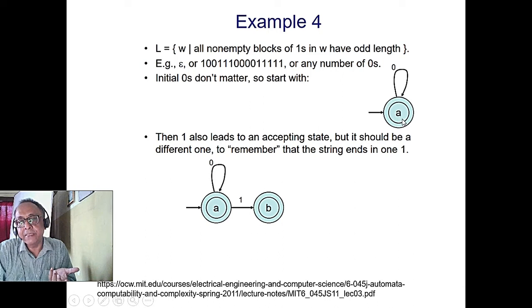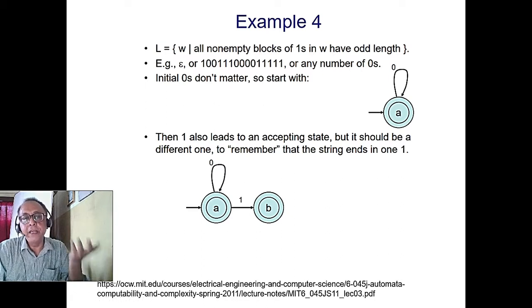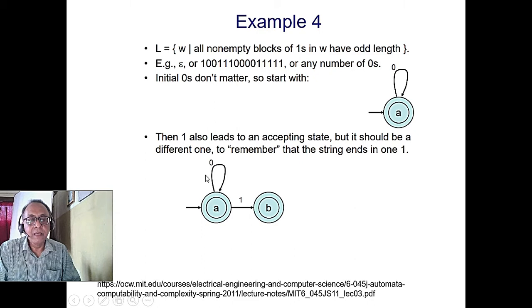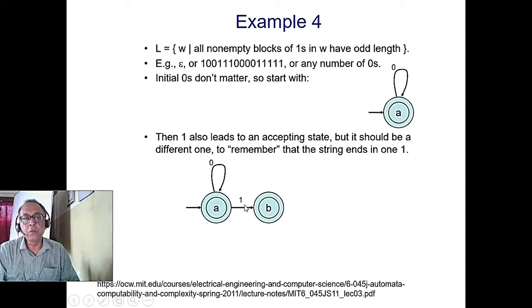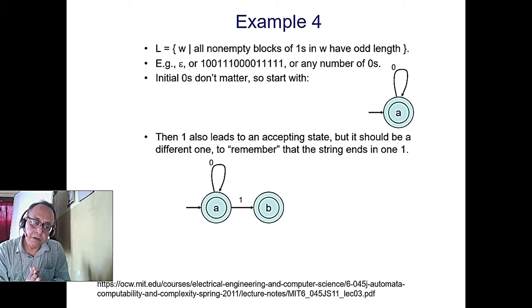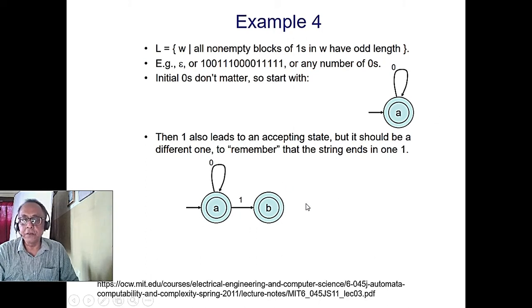This DFA accepts epsilon (the empty string) because the initial state is an accepting state, and also any number of zeros. It does not accept '1' followed by more input in certain configurations. The language accepted includes: epsilon, any number of zeros, and any number of zeros followed by exactly one '1'. If more than one '1' appears, it will not accept.